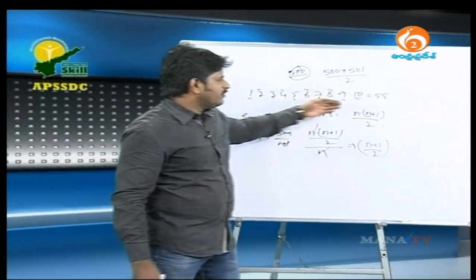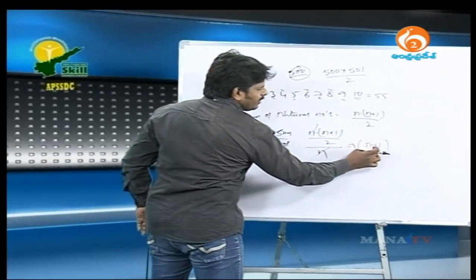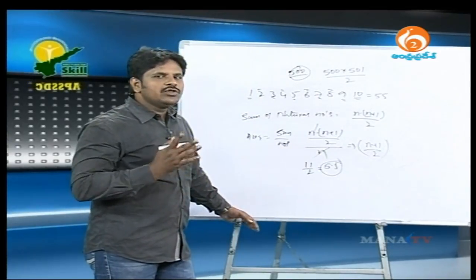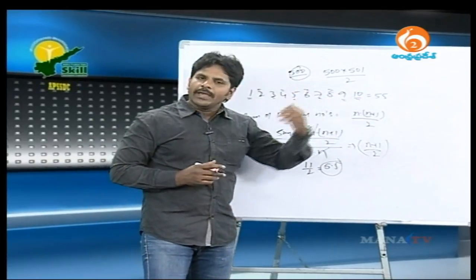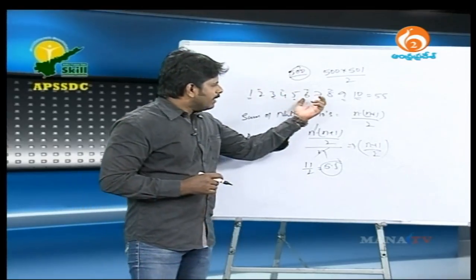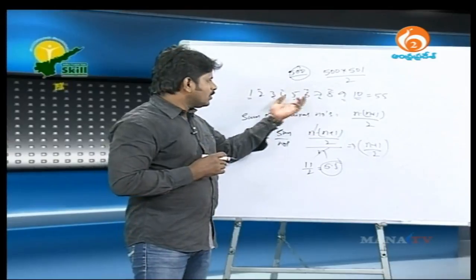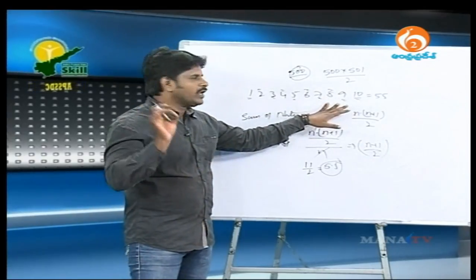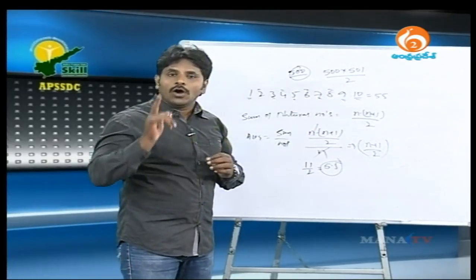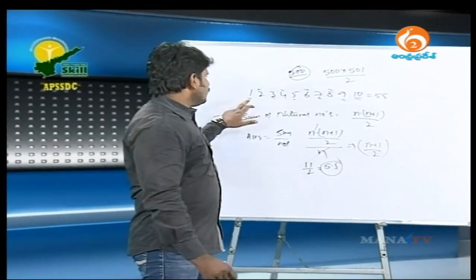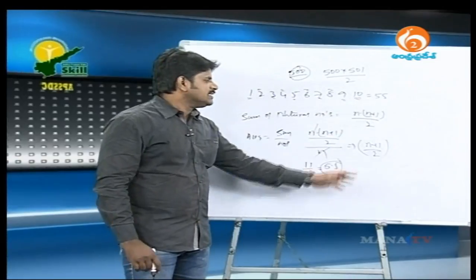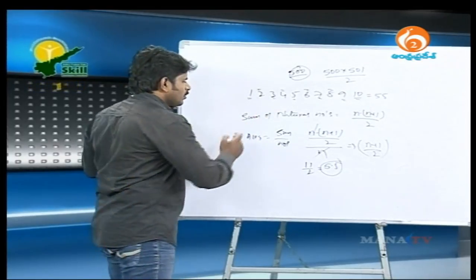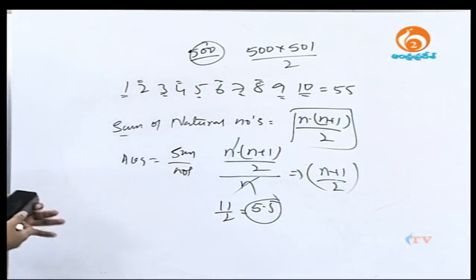We have 3 to 4 ways to find averages. First, directly add and divide by number of numbers. Second, if it is consecutive numbers, consider the middle number. If odd count, middle number is the average; if even count, the average of the two middle numbers. Third, use first number plus last number divided by 2, or use N plus 1 by 2 where N is number of observations.